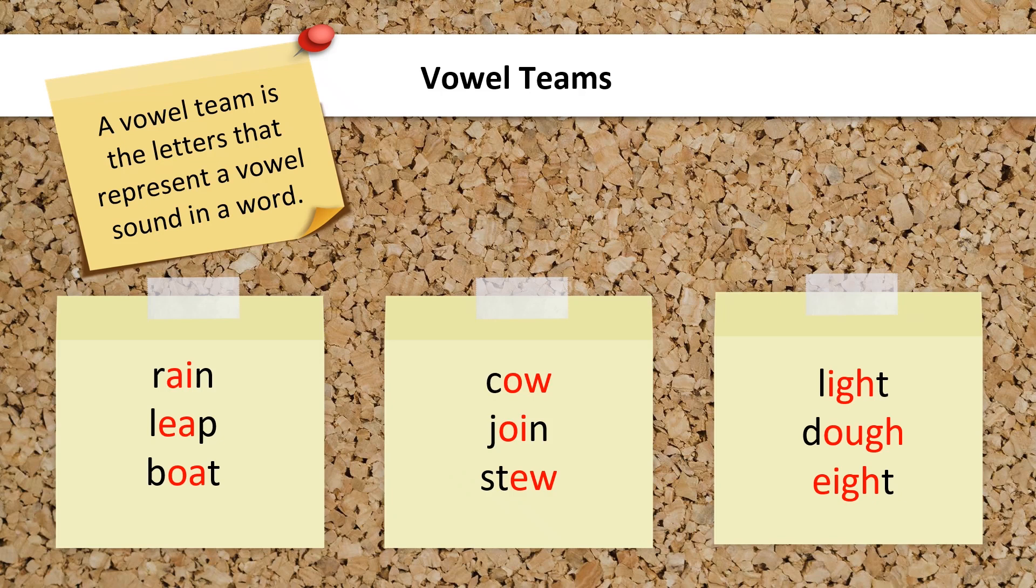But look at the letters used to make the vowel sound in the word light, I-G-H. O-U-G-H makes the O sound in the word dough, and E-I-G-H makes the A sound in the word eight.